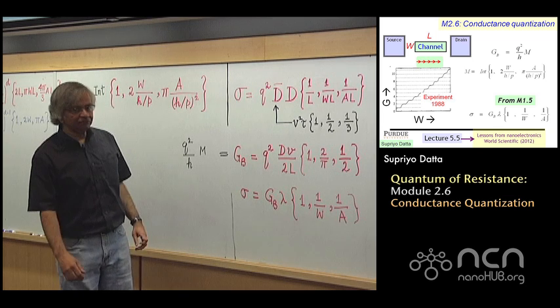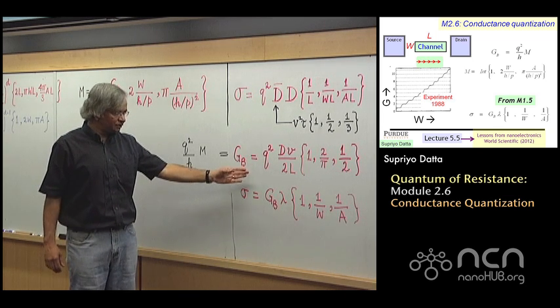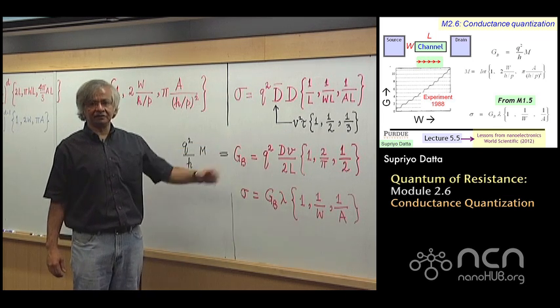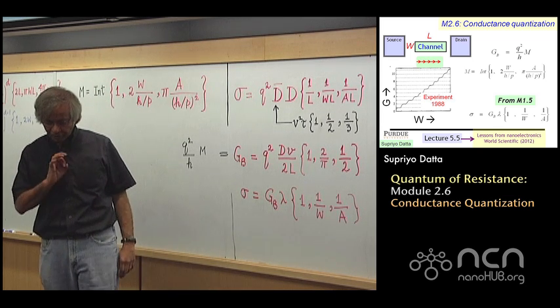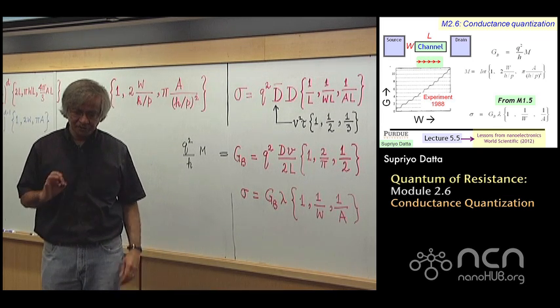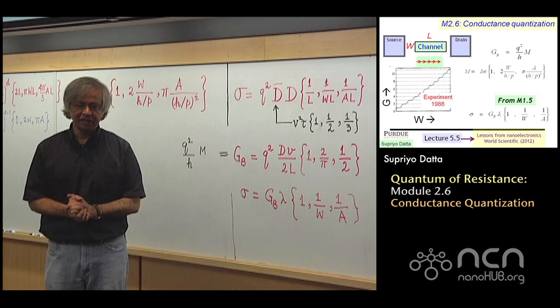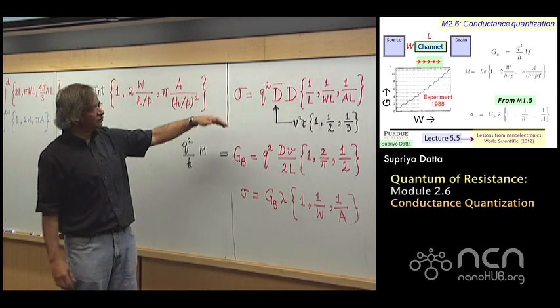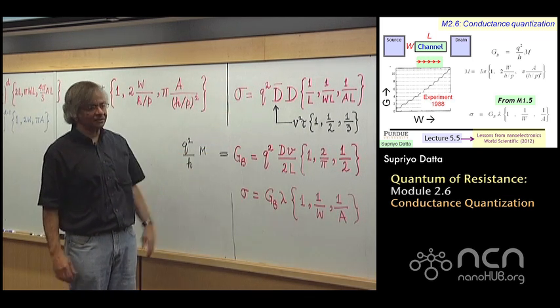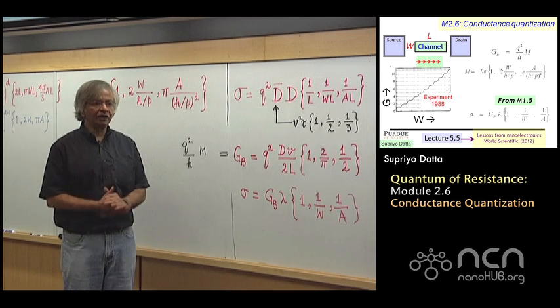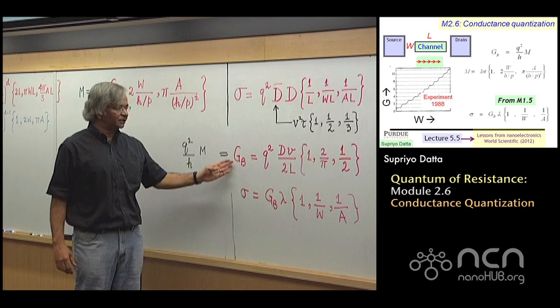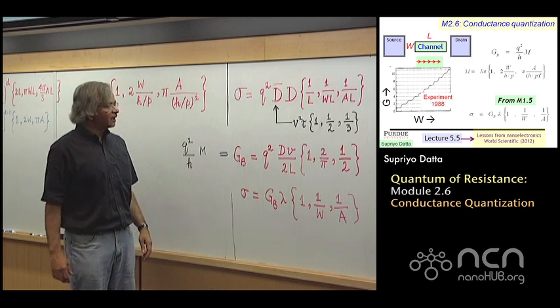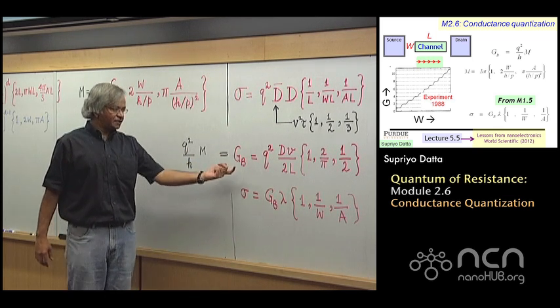In the last module, we started talking about ballistic conductors. Because one of the nice features of this way of describing transport, the one that we introduced last week, is that both the diffusive result and the ballistic result all fall out simply from the same viewpoint.